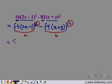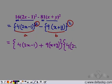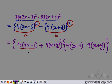a plus b. So we write four times two x minus one plus nine times x plus y, times a minus b: four times two x minus one minus nine times x plus y. This is what we have. This is a, this is b. So a squared minus b squared is equal to a plus b times a minus b.